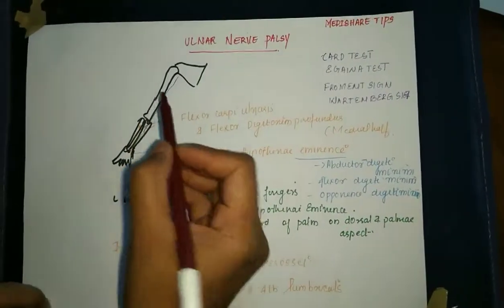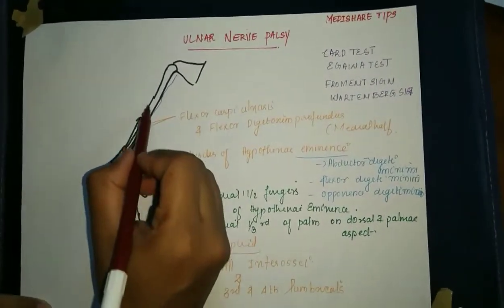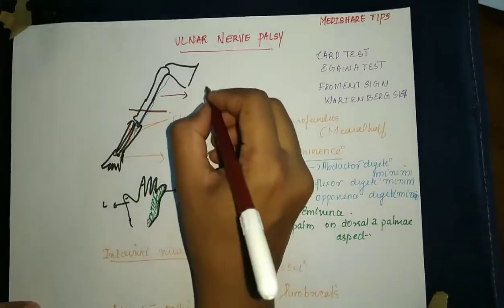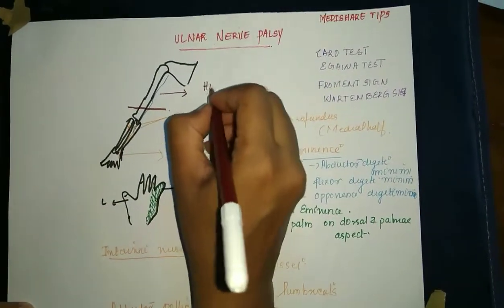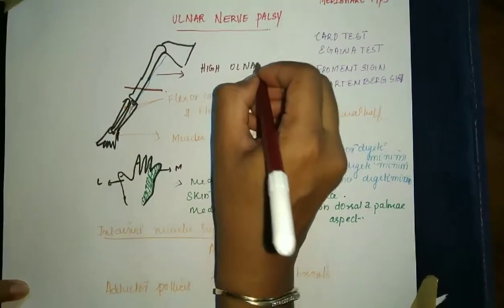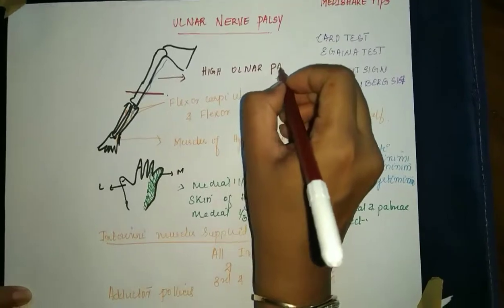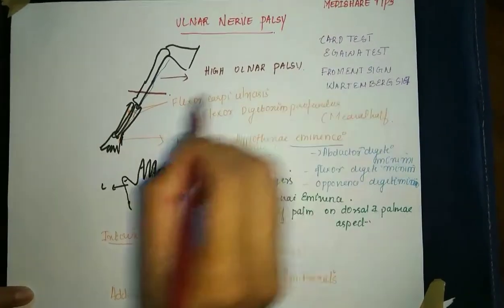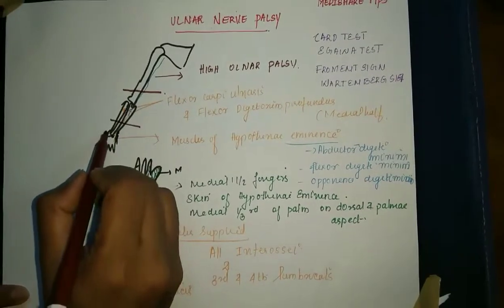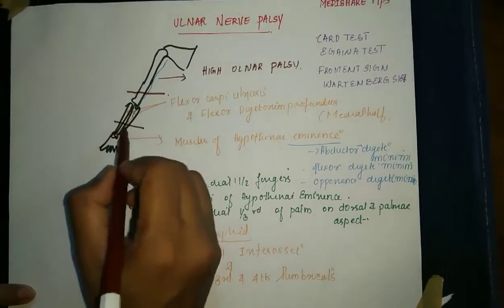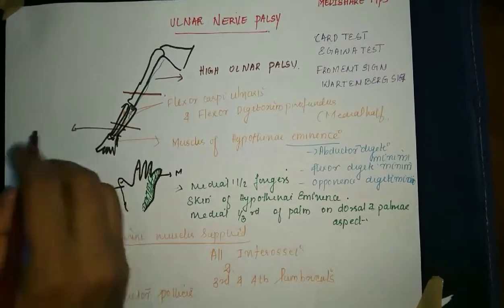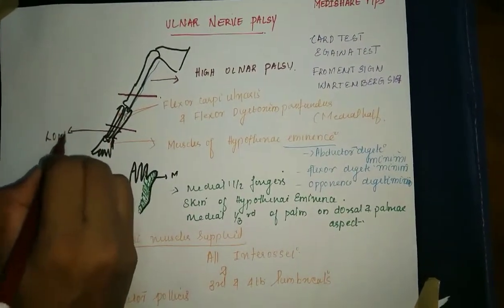Wartenberg sign. Ulnar nerve palsy can be above the elbow, which is known as high ulnar palsy. When it is at the distal third of the forearm, at the level of the wrist, it is called low ulnar palsy.